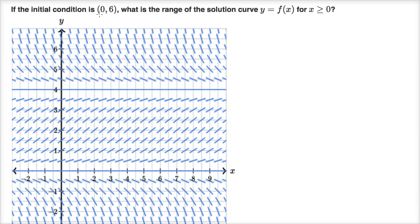If the initial condition is zero comma six, what is the range of the solution curve y equals f of x for x is greater than or equal to zero.